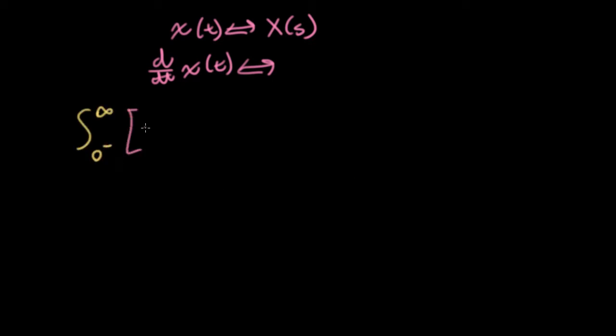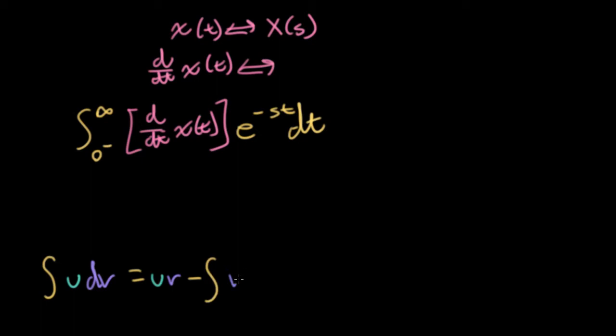So we're going to use the exact same technique we used in the previous lecture, which is to insert the thing we're taking the Laplace transform of into the Laplace transform integral. We're integrating against e to the minus st over time, and we'll once again use integration by parts, usually generically stated as the integral of u dv being equal to u times v minus the integral of v du. So we need to figure out what u and dv are going to be.